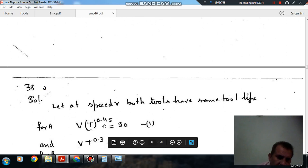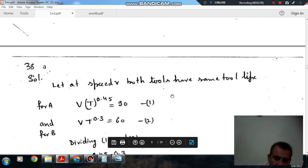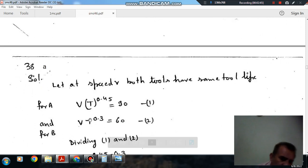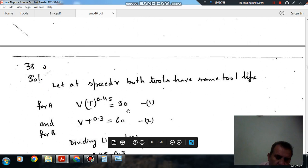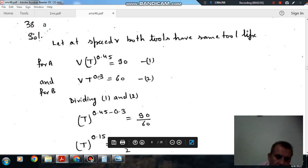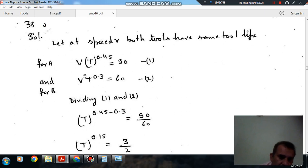For tool A and for tool B, the n is 0.3 and k is 60. So its tool life equation is V T^0.3 is equal to 60. So now we can assume the same tool life and same speed at which the tool life is same for both the tools. So we are assuming that speed of the tool is V, then tool life of tool A is T, and when the speed for B, the tool life is T.